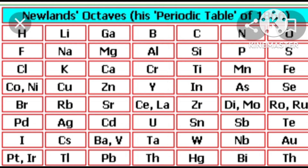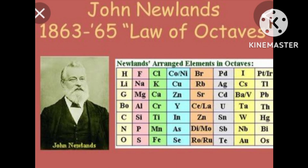After calcium, elements such as chromium to yttrium did not show the octave rule. Out of 56 elements, the octave rule was only applicable up to calcium; the remaining elements do not follow the octave rule. That is why Newland failed to arrange all elements in the periodic table.